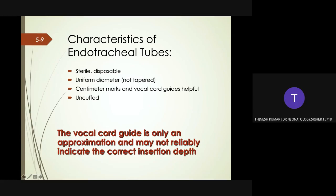What type of endotracheal tube should be used? The endotracheal tube should have a uniform diameter throughout the length of the tube. Tapered or cuffed tubes are not recommended for neonatal resuscitation. Endotracheal tubes have centimeter markings along the side for measuring the distance to the tip. Many tubes also have lines near the tip that serve as vocal cord guides. When the tube is inserted so that the vocal cords are positioned between these two sets of lines, the tip is expected to be above the carina. However, the vocal cord guide is only an approximation.